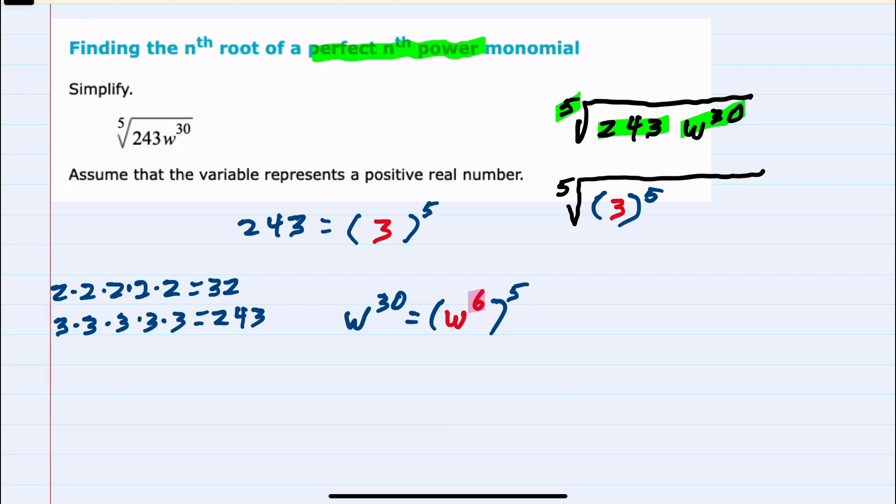Because multiplying the power inside and outside would give us 30. So our second piece is w to the sixth raised to the fifth power.